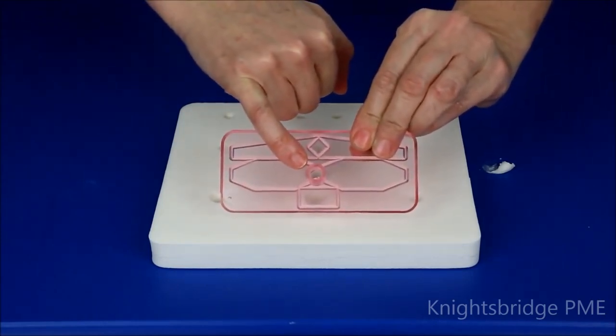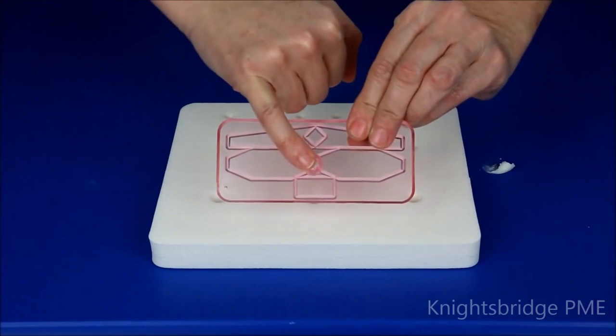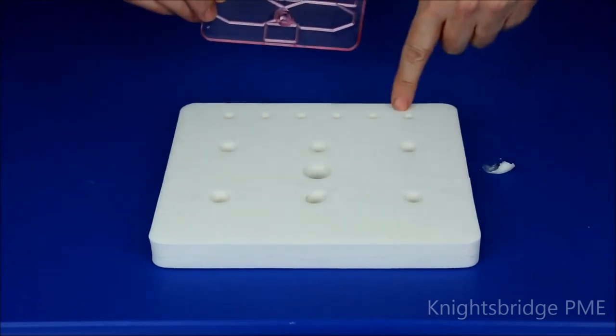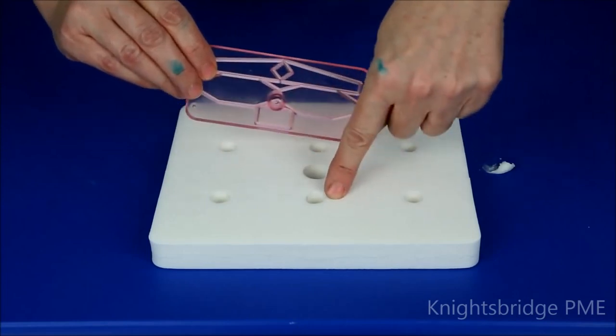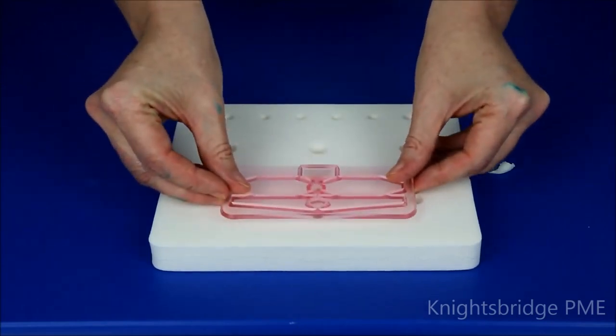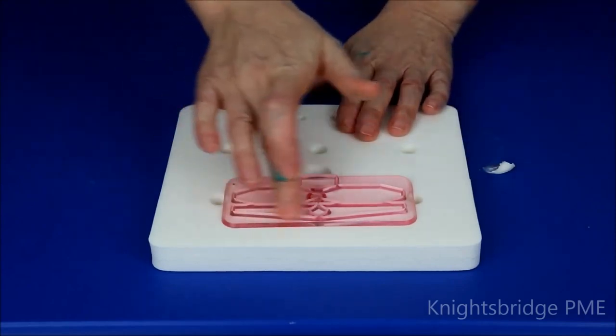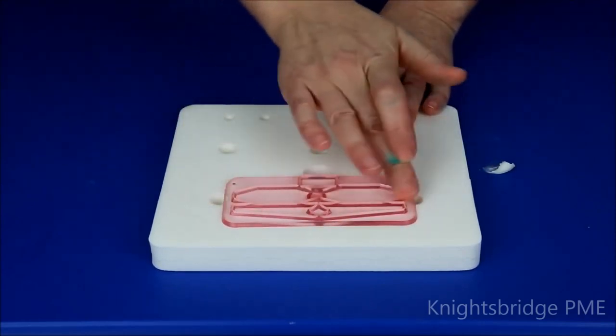This little handle actually slots into one of these holes in the gem pad. This is the correct size to go into that little hole there, so I'm just going to push that in there. I'm going to run a little tiny bit of petal base, which is a release agent, just across the cutter. That helps keep the paste coming out nice and easily.